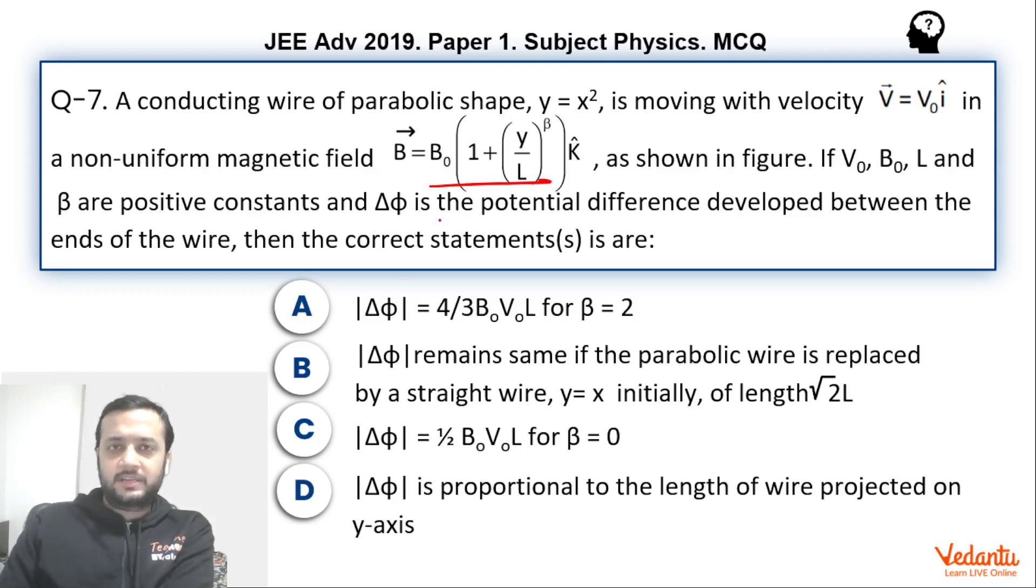v₀, B₀, L and β are positive constants and Δφ is the potential difference developed between the ends of the wire. We have to comment upon the value of the EMF developed across the wire because of the motion for different values of beta and there are certain other things being asked in the question.